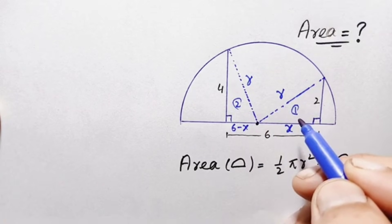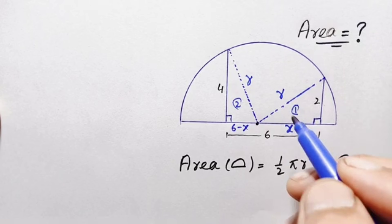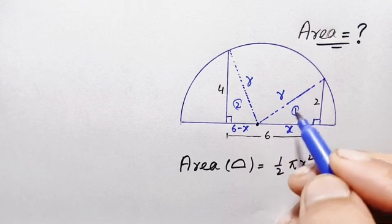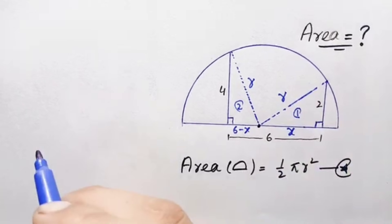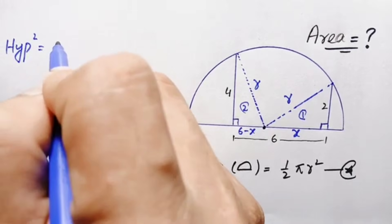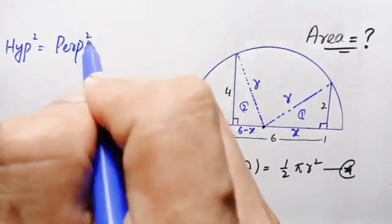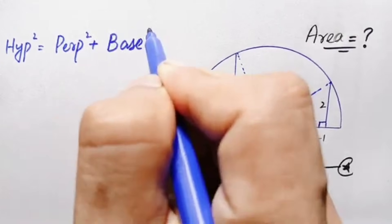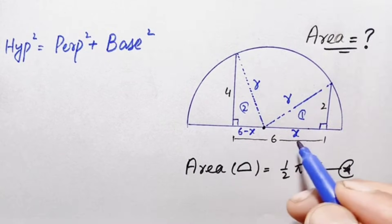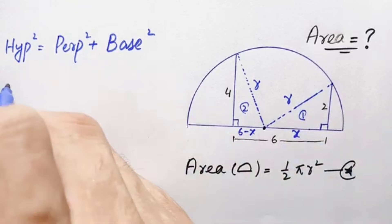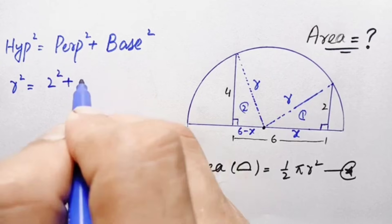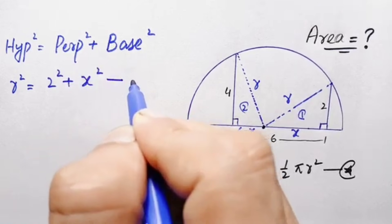We will find the value of r using the Pythagorean theorem, which states that hypotenuse² equals perpendicular² plus base². For triangle number one, the hypotenuse is r, the perpendicular is 2, and the base is x. Substituting, this becomes r² = 2² + x², which simplifies to r² = 4 + x². Let us call this equation number one.